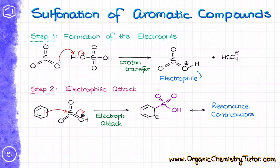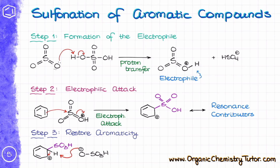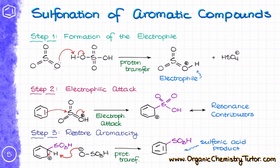The protonated SO3 is the electrophile that will attack the aromatic ring. SO3 by itself is just not strong enough to attack the aromatic ring, so we need to protonate it to push it over the edge. The electrophilic attack gives us our typical carbocation intermediate. Since this is already the third time we are seeing this type of intermediate, try drawing all the resonance structures on your own, using the previous two examples as templates. Finally, we restore aromaticity by removing the proton from our carbocation, again using the sulfuric acid conjugate base, yielding the sulfonic acid product.